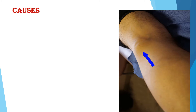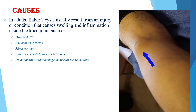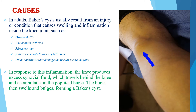When we look at the causes of popliteal cyst or Becker's cyst, in adults, Becker's cyst usually results from an injury or condition that causes swelling and inflammation inside the knee joint, such as osteoarthritis and rheumatoid arthritis. In response to this inflammation, the knee produces excess synovial fluid which travels behind the knee and accumulates in the popliteal bursa, which then swells and bulges, forming a Becker's cyst.